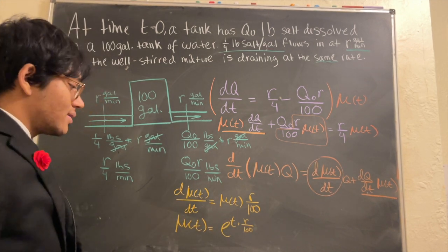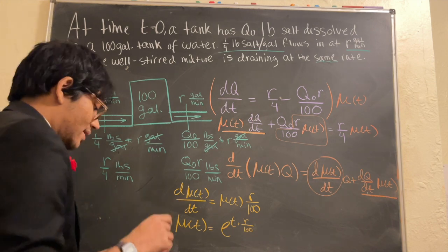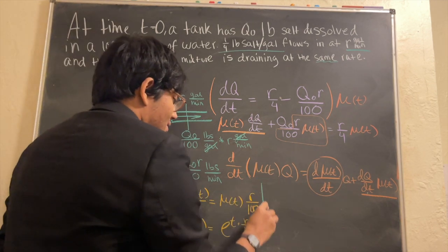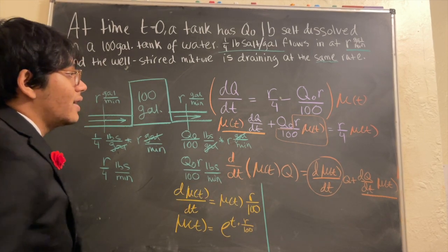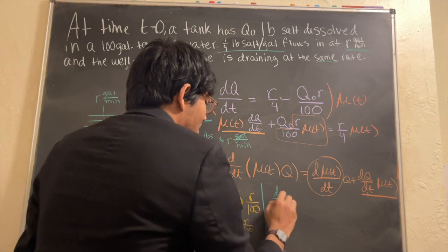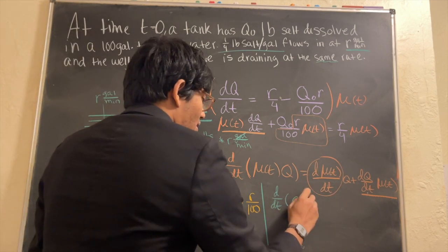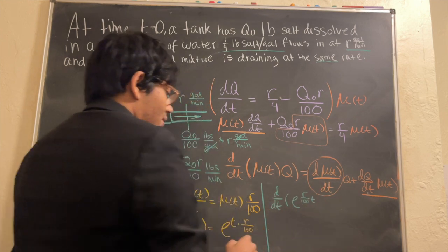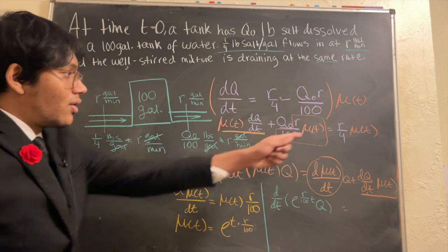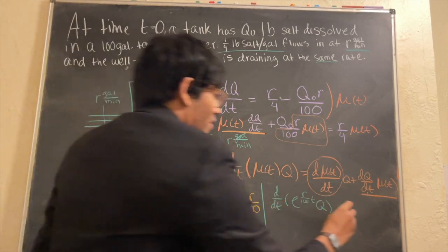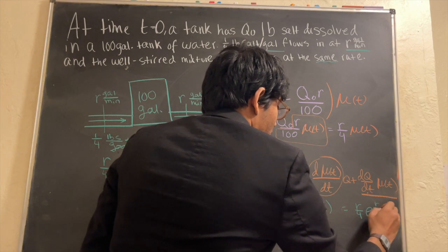So let's go ahead and do this. How am I going to do this? Well, I'm going to plug back my integrating factor over here. And so on the left-hand side, let's demarcate our workspace. On the left-hand side I'm going to have d/dt of mu of t, which is e to the r over 100 t times q is equal to what? Well, it's equal to r over 4 times mu of t, so r over 4 times e to the r over 100 t.